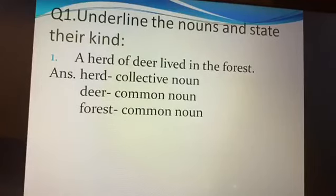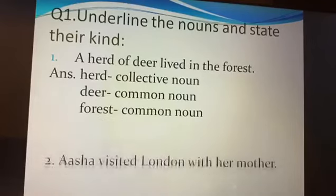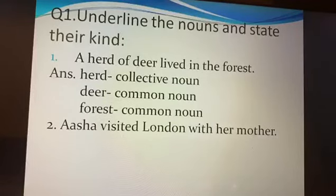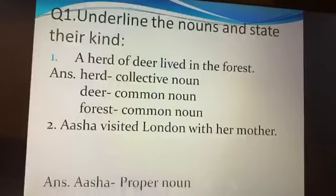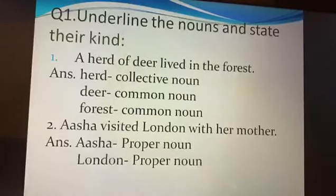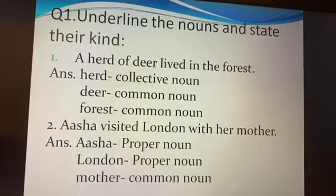Second — Asha visited London with her mother. So Asha is the name of a person, so it is a proper noun. London is the name of a place, so it is a proper noun. And mother — the specific name is not mentioned, so it is a common noun.